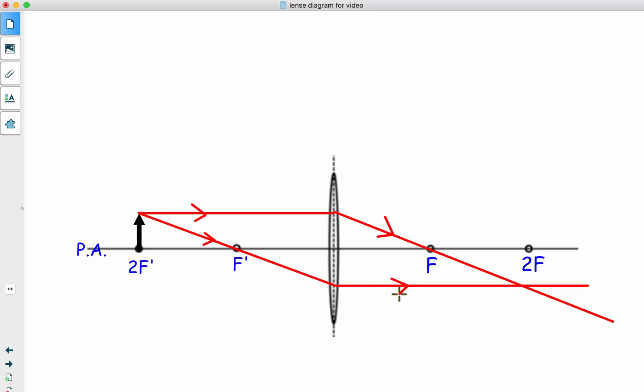Now, in this case, the image should be directly below 2F. And I can see right here that my ray was off a tiny bit. And that's why this one is off. Your image is exactly the same size as the object. It's located directly at 2F. It is inverted. And it is also a real image.